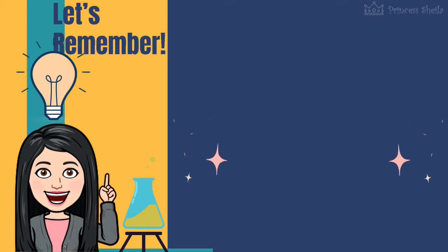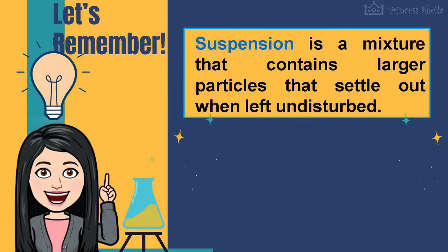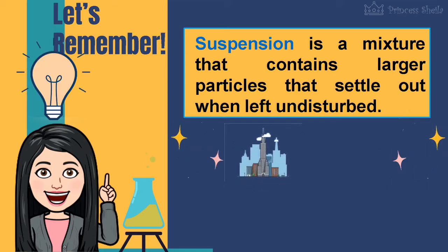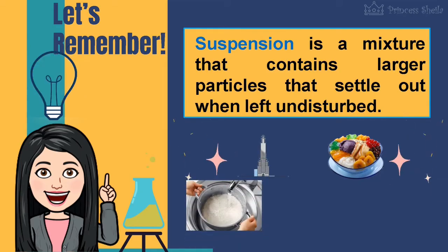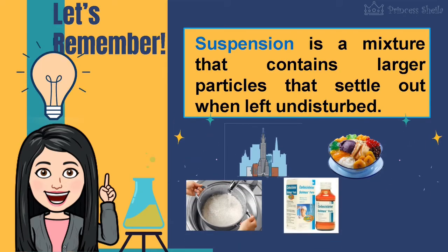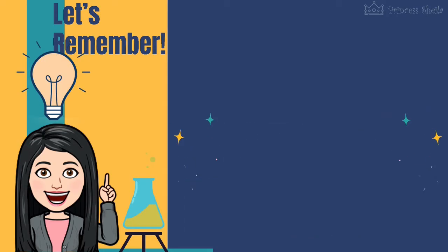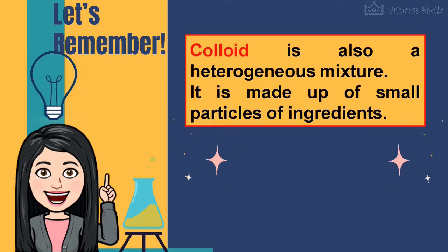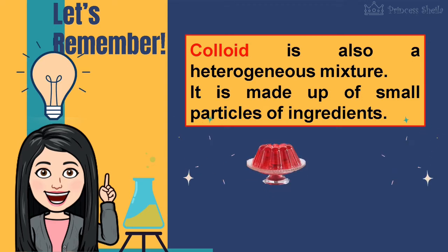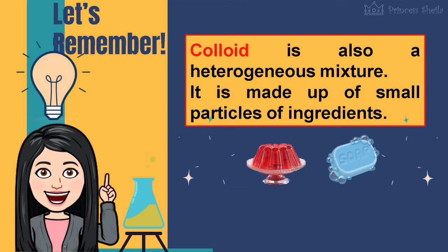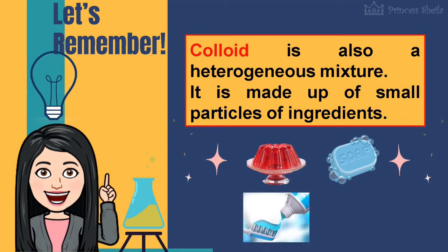Now let's remember: suspension is a mixture that contains larger particles that settle out when left undisturbed. Its uses are for building structures, in food and food preparations, in medicine, and for decorations. On the other hand, colloid is also a heterogeneous mixture made up of small particles of ingredients. Its uses are in food and food preparations, as cleaning agents, for personal grooming, and for decorations.